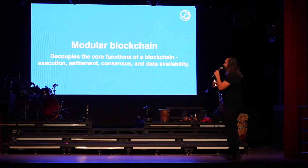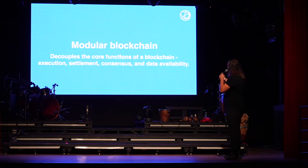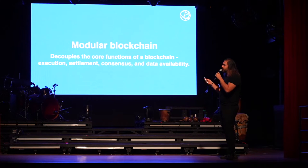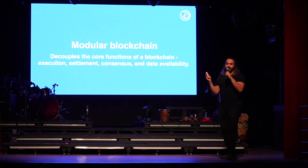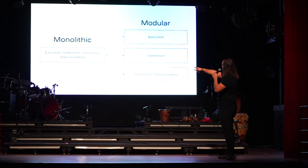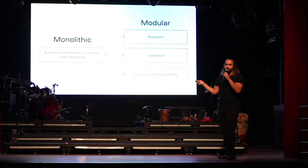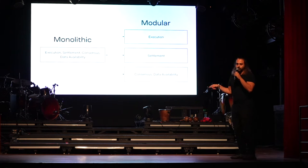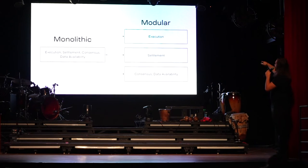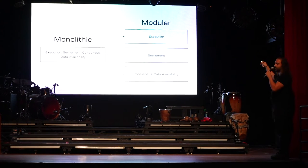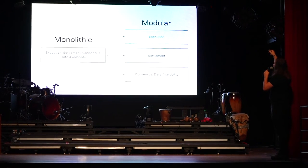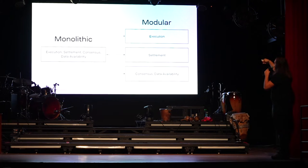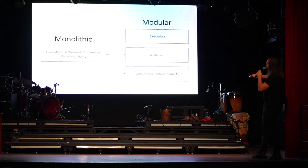So what is a modular blockchain? A modular blockchain decouples the core functions of a blockchain: execution, settlement, consensus, and what we call data availability. In the example on your left, you have what we call a monolithic blockchain - it contains execution, settlement, consensus, and data availability all wrapped up in one. On the modular side, we're separating it. You have execution, a settlement layer - if you have a rollup on the execution side that needs to settle somewhere, you'd have that settlement layer. And finally, consensus and data availability separated.